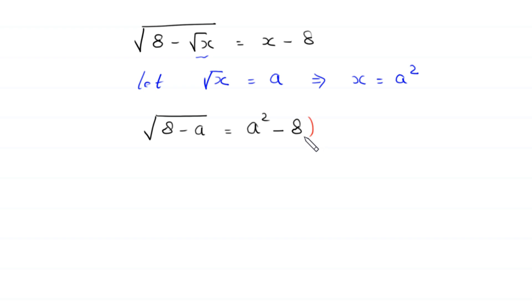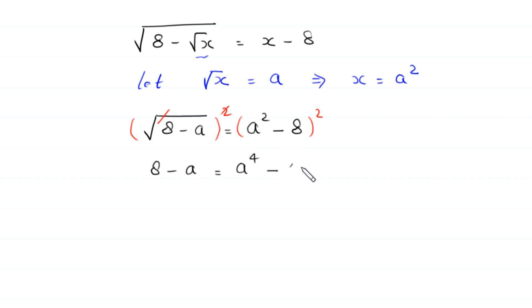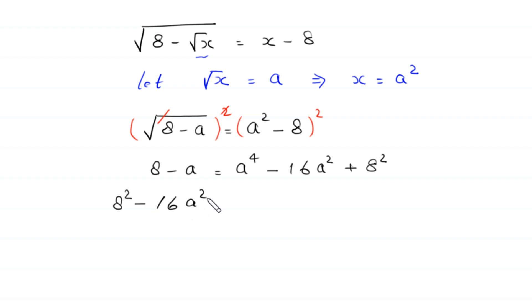We square both sides. The square on the left cancels with the square root, leaving 8 minus a. The right side, (a squared minus 8) squared, expands to a to the power 4 minus 16a squared plus 64. So we have: 8 minus a equals a to the power 4 minus 16a squared plus 64.